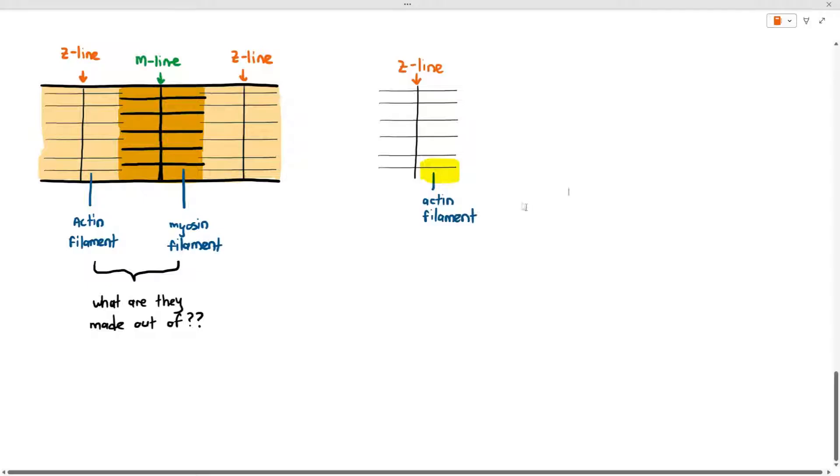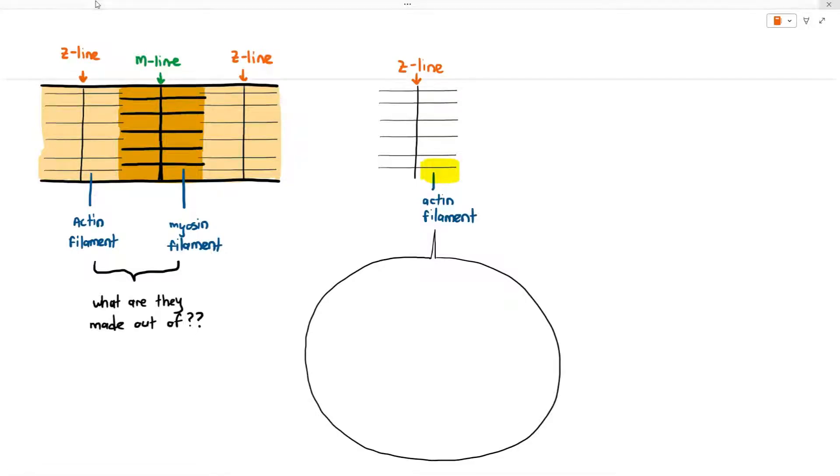We are going to enlarge and try to draw out what the actin filament looks like. Even by using an electron microscope when you magnify deeper you don't get a very clear image because they are very tiny structures, but based on research we have an idea of what the actin filament is actually made out of.